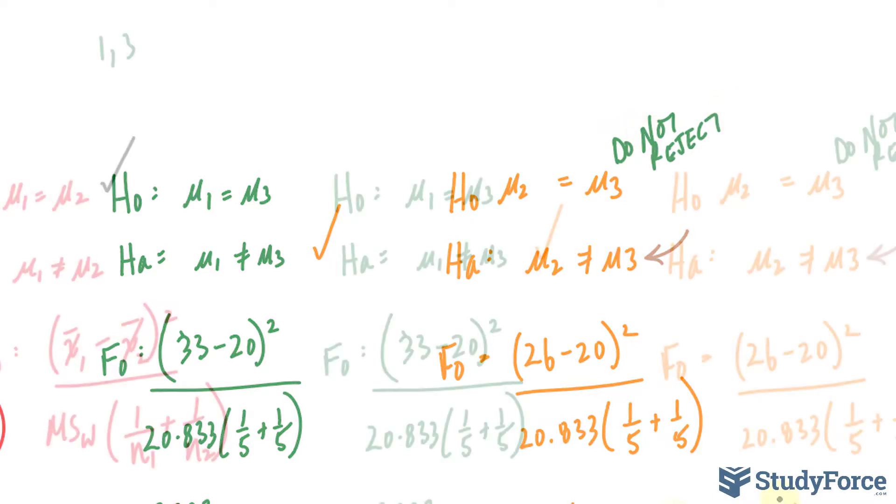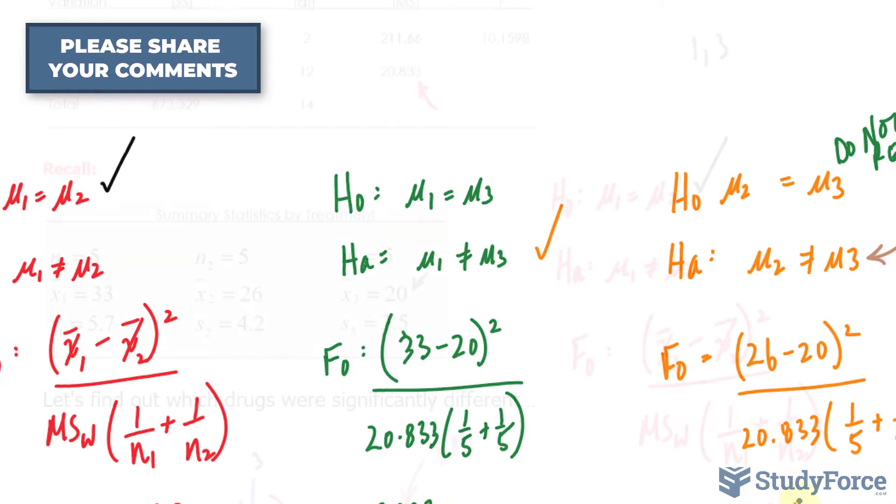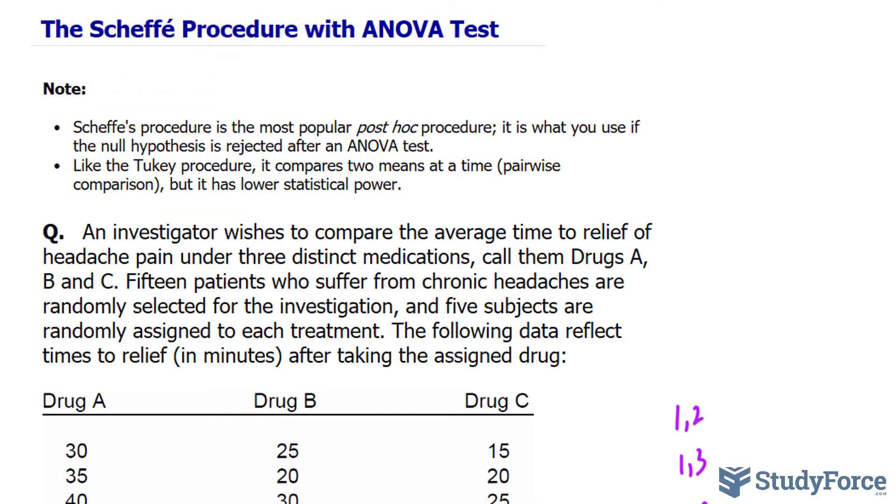And so there you have it. Drug 1 and Drug 3 were the significant difference in this group. And that is how to use Scheffé's procedure alongside the ANOVA test to help us determine that.